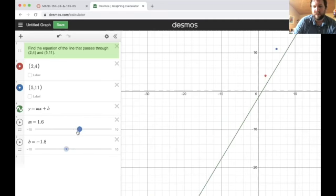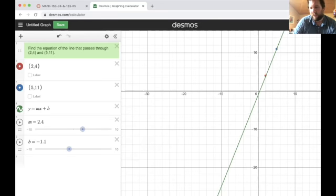I'm just moving the sliders until I see what gets me passing through these two points as closely as I can. I'm getting pretty close to passing through. The blue looks good, but the red's a little off.